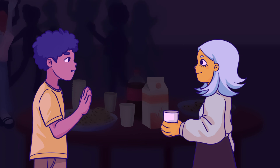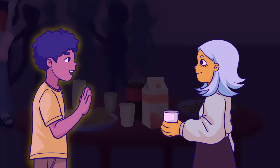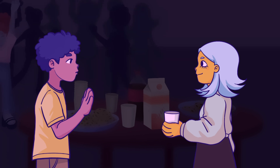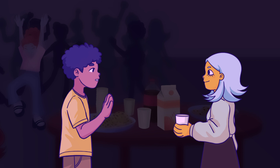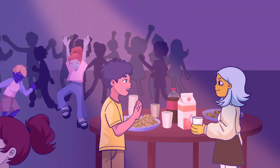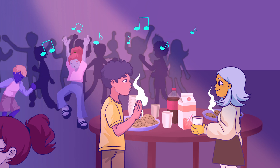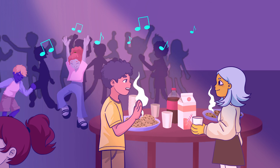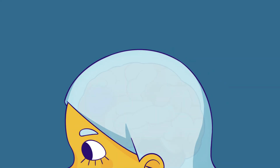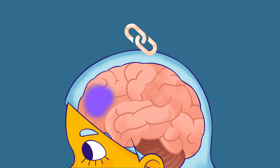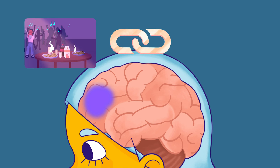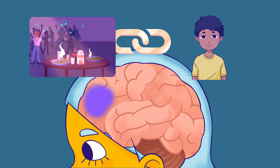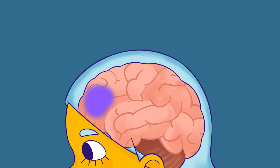The interesting thing about forming memories is that your brain encodes and stores not only the information that you're actively focused on, but also some of the contextual information from your surroundings. Things you might overlook, like the music playing in the background, a subtle aroma in the room, or the physical layout of the space, are encoded in addition to your new friend's face and name. This link between the context and the thing you want to remember is the basis for context-dependent memory.